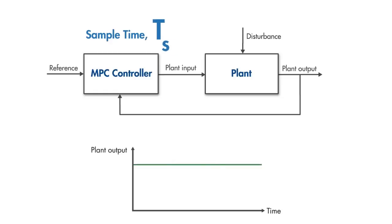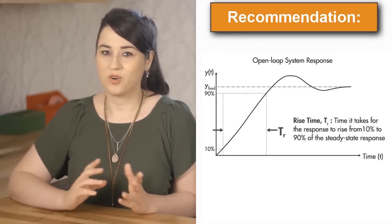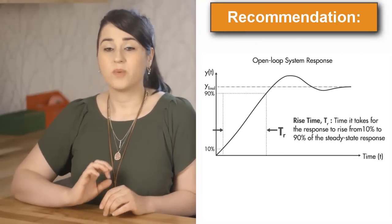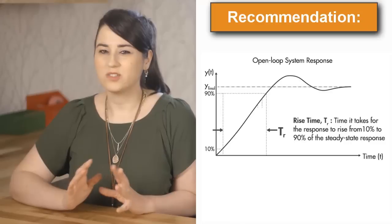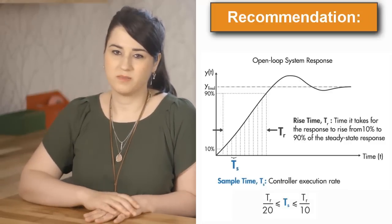On the contrary, if the sample time is too small, the controller can react much faster to disturbances and setpoint changes, but this causes an excessive computational load. To find the right balance between performance and computational effort, the recommendation is to fit 10 to 20 samples within the rise time of the open-loop system response.